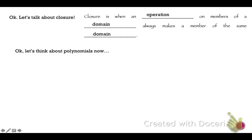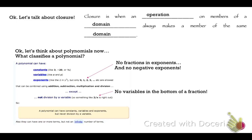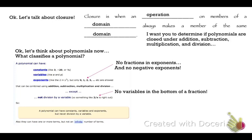We are talking about polynomials, so we know what a polynomial is. A polynomial can have constants, variables, and exponents, but only exponents that are whole numbers: 0, 1, 2, 3, and up. They can be combined with addition, subtraction, multiplication, and division — except not division by a variable. So no fractions in the exponents, no negative exponents, and no variables in the denominator, because a variable in the bottom would just create a negative exponent. Using these rules, I want you to determine if polynomials are closed under addition, subtraction, multiplication, and division. We'll talk about it tomorrow.